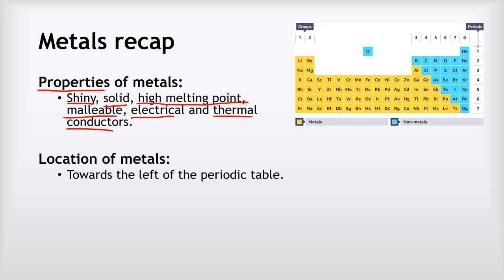They are good electrical and thermal conductors, which means electricity and heat can pass through them pretty easily. On the periodic table we find metals towards the left. If you picture a line between boron and aluminium and step that line down, everything to the left of that line are metals, and all the elements to the right of it plus hydrogen are non-metals. About 85% of elements are actually metals.